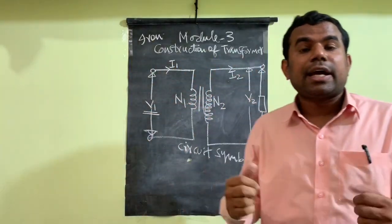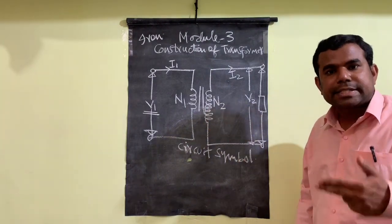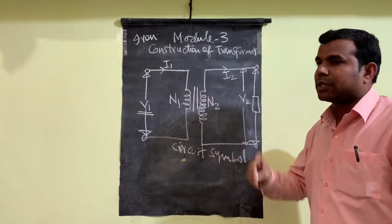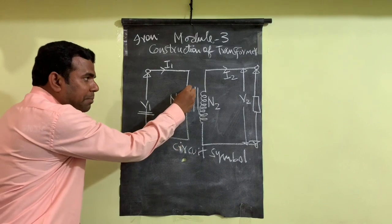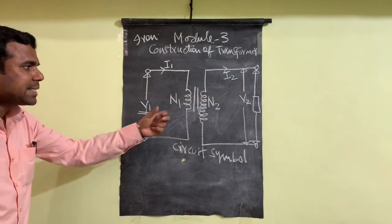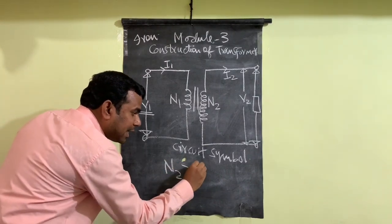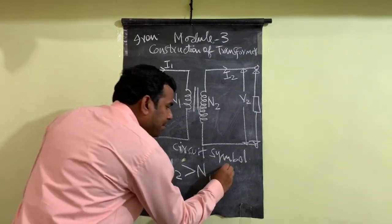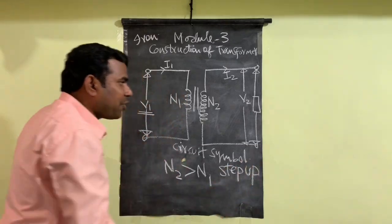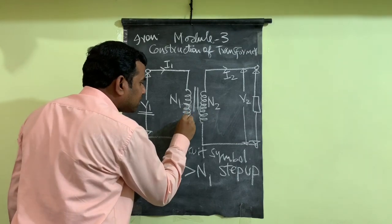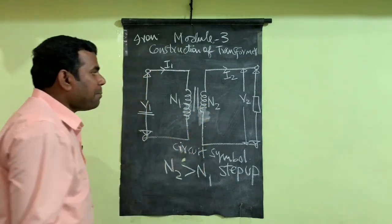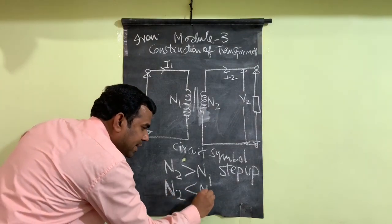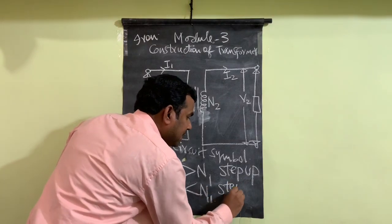Many students have confusion about how to identify whether a given transformer is a step up or step down transformer. One important way to distinguish between the two types is through the circuit symbol. When N2 is greater than N1 — more turns on the secondary — this type of transformer is referred to as a step up transformer. On the other hand, if N2 is less than N1, meaning more turns on the primary and fewer on the secondary, we classify the transformer as a step down transformer.